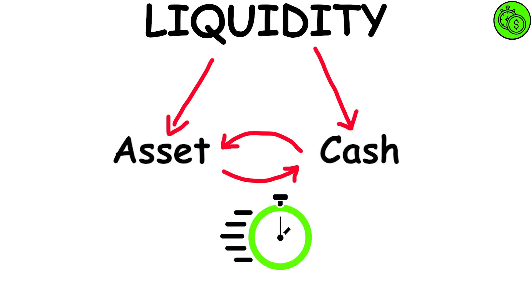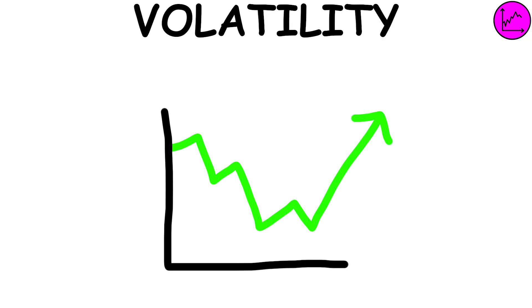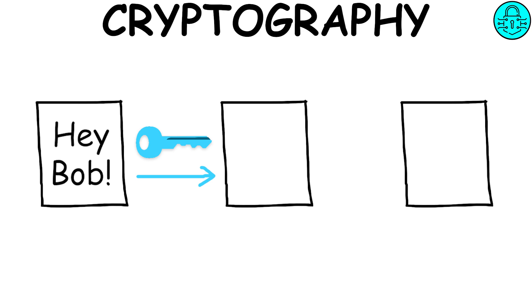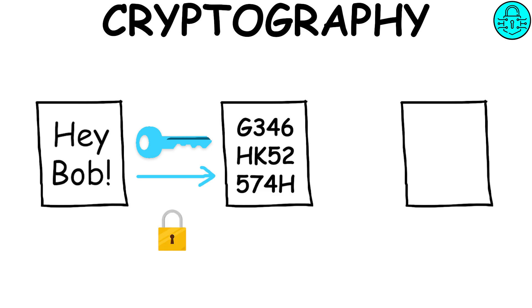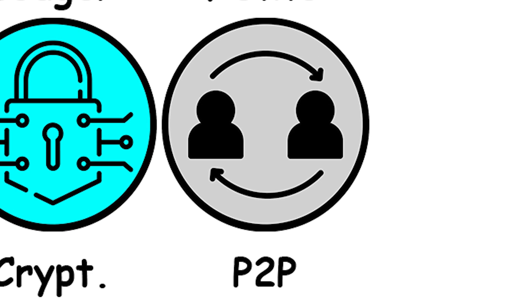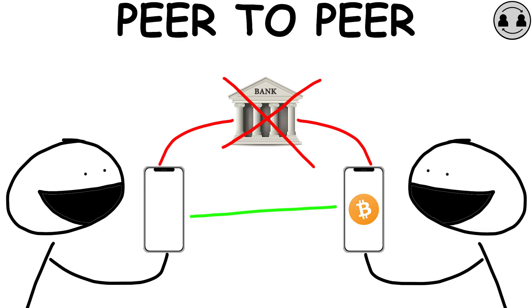Liquidity: cryptocurrency liquidity refers to how quickly traders can exchange digital assets for fiat currency. Volatility: volatility refers to the tendency of an asset to change in price. Cryptography: it refers to the science of keeping information safe and secure. It helps protect blockchains and cryptocurrencies through the algorithm by hiding the data until it reaches the recipient. Peer-to-peer: it refers to a transaction between two people that does not require the intervention of an intermediary or central authority.